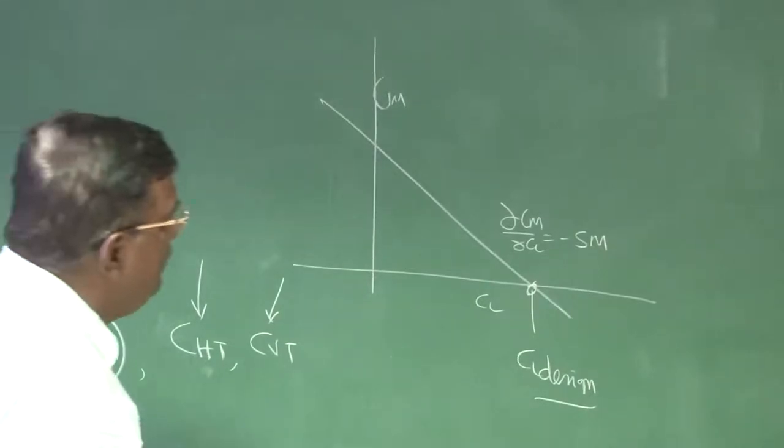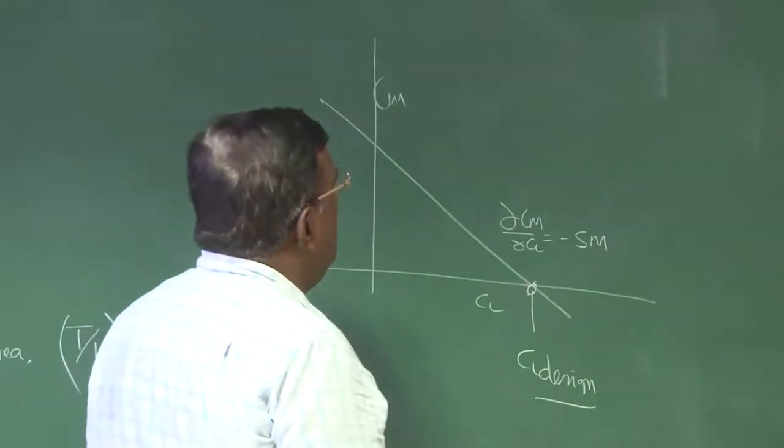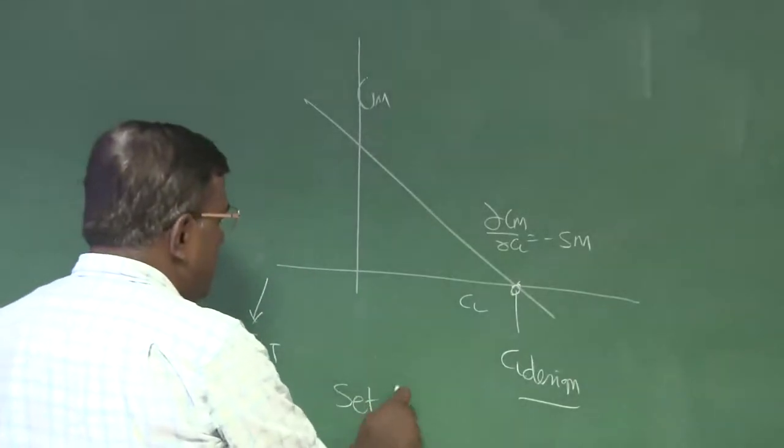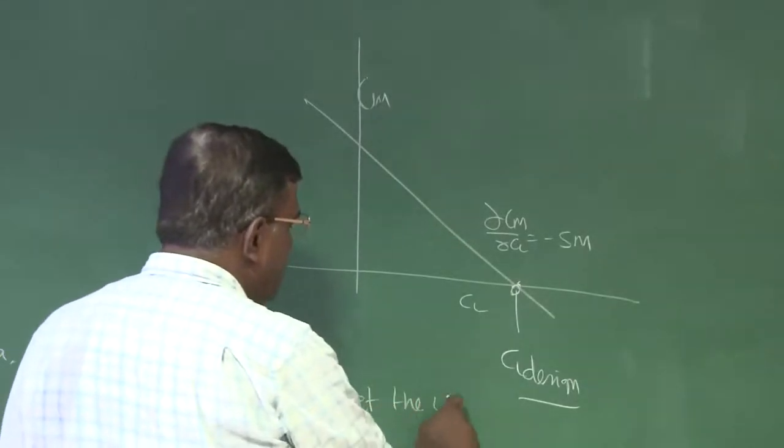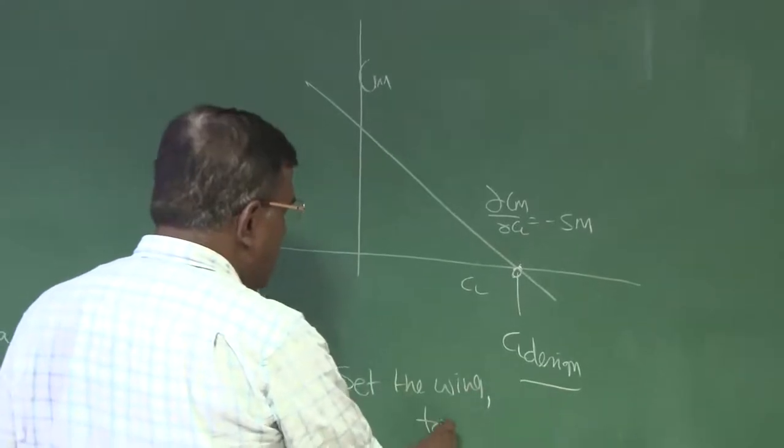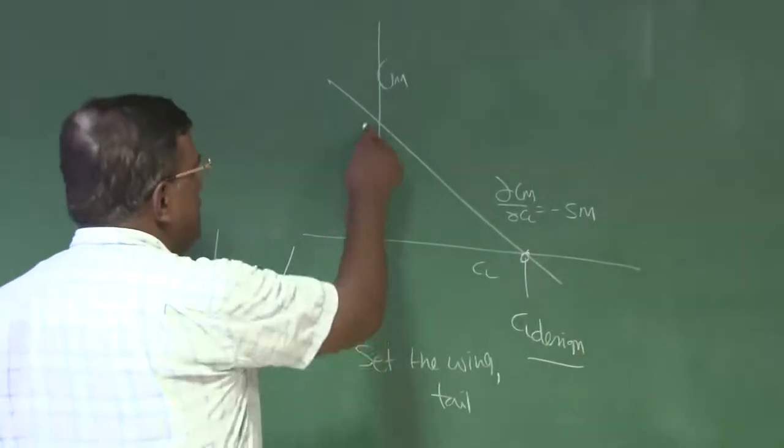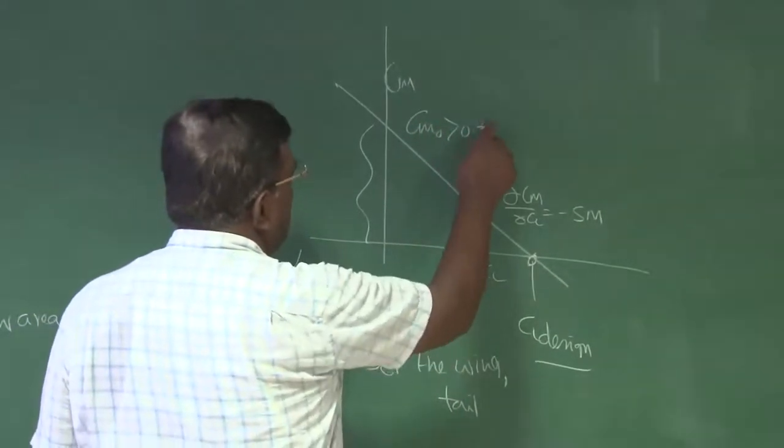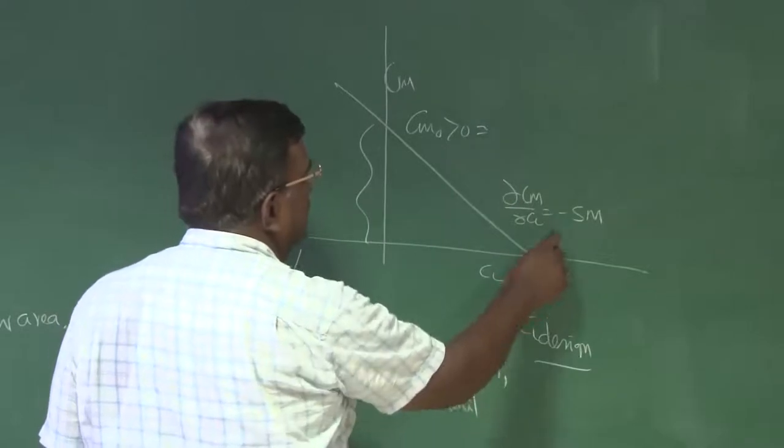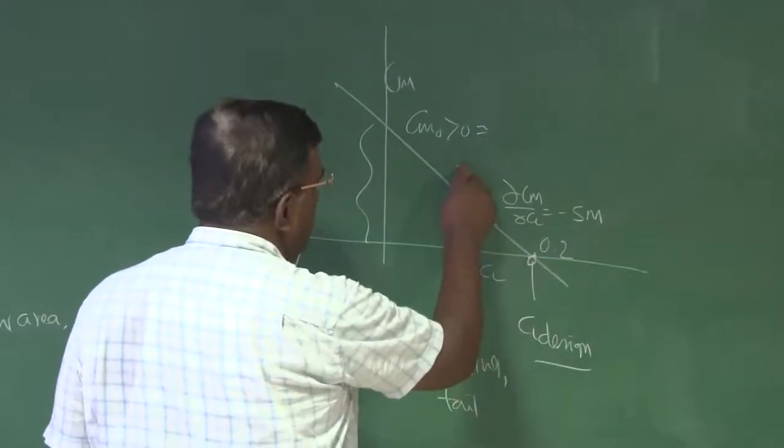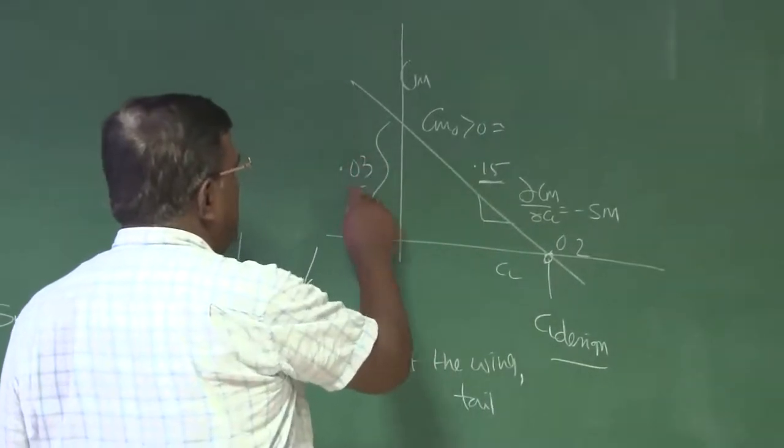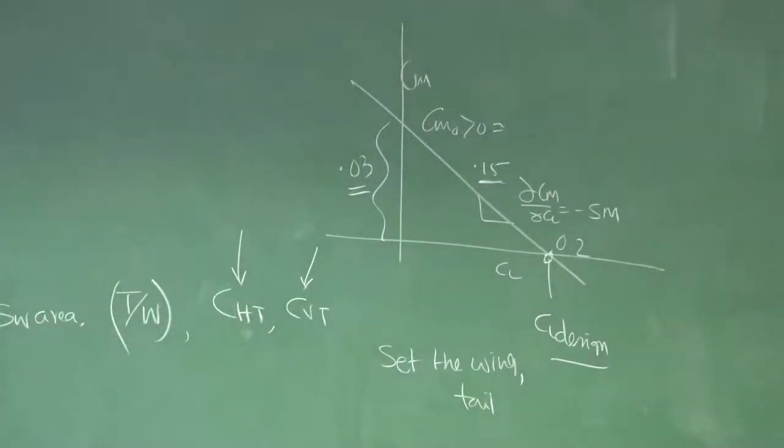Once I do that, then we were looking for how do I set the wing and tail so that these two conditions are met. That is, one is CM0 greater than 0, which is particular number. If this is 0.2 and this slope is 0.15, that is 15% static margin, then this value is 0.3. The question we addressed was, how do I locate wing and tail? What is tail setting angle? How do I find it?